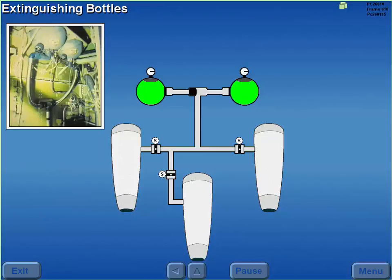Pressurized halon for the engines is stored in two identical extinguishing bottles. The bottles may be used on any engine. However, only one bottle can be discharged at a time.